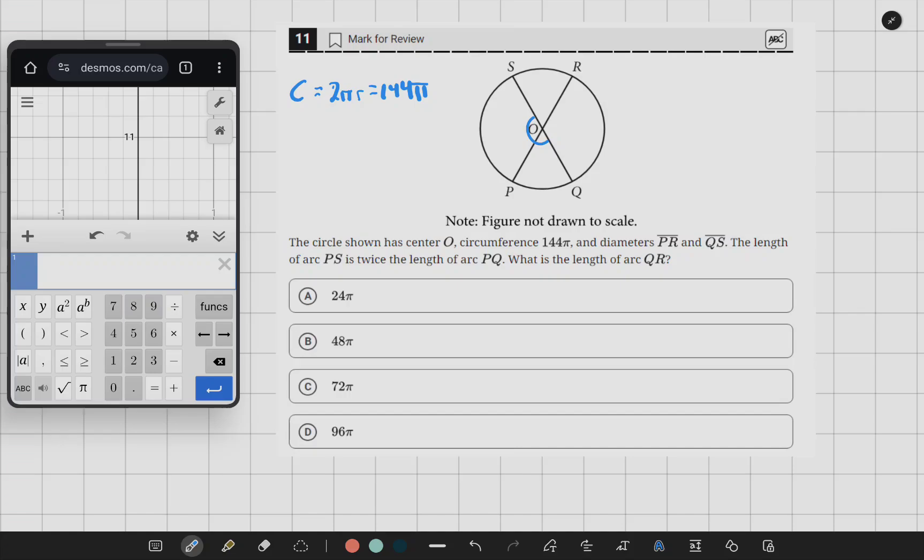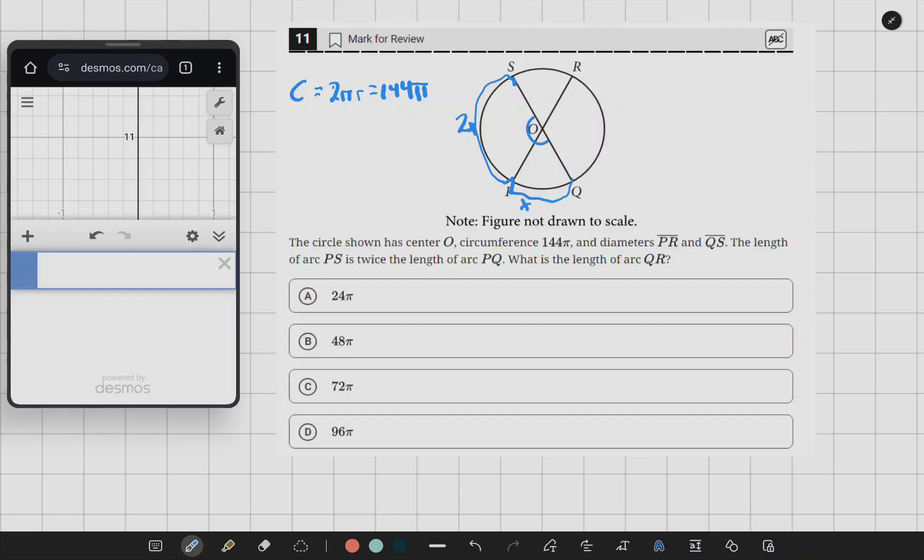We also know that arc PS is going to be twice the length of arc PQ. And we can infer that since it's split directly down the middle, PS is going to be equal to QR.